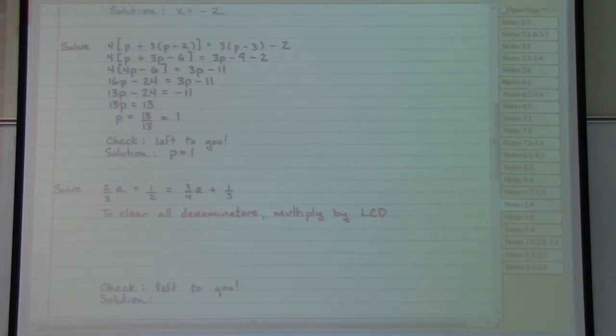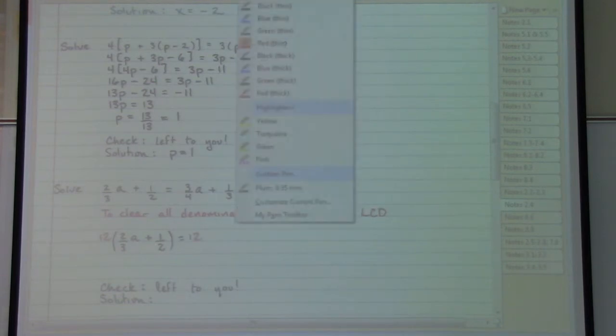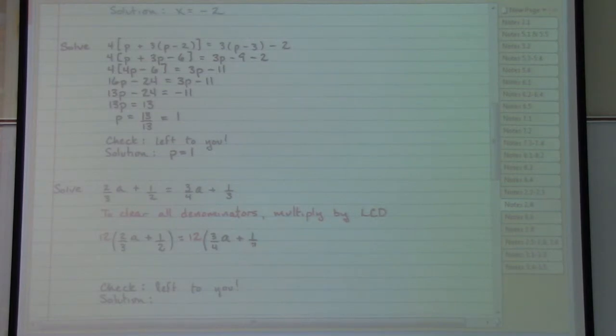Looking at these denominators 3, 2, 4, and another 3, the least common denominator for these would end up being 12. So in this particular exercise I would want to take 12 and multiply it by everything that shows up on the left side of the equal sign. And I would want to take 12 and multiply it by everything that shows up on the right side of the equal sign. Which means that we would need to distribute to write that out in a way that will help us get all of the right pieces.